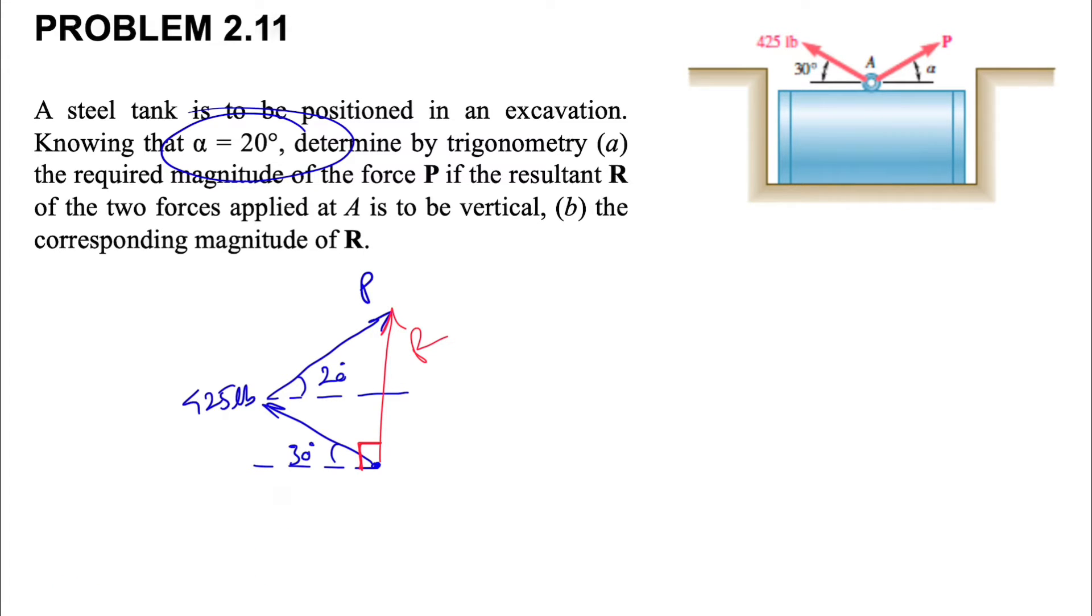We know that R needs to be vertical, which means this angle has to be a right angle. We know this one is P and we have the 425 pounds. We configured some angles here, shown in light blue. Since this angle is a right angle...